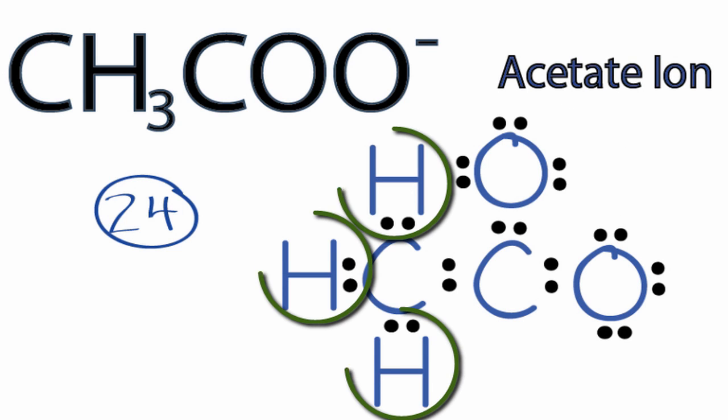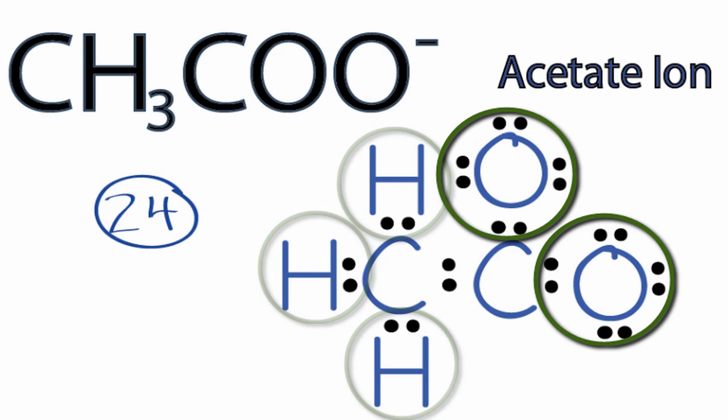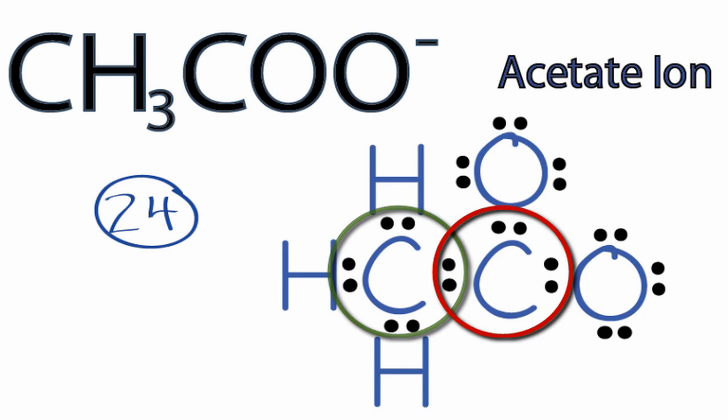So you can see the hydrogens each have two valence electrons. Their outer shells are full. The oxygens have eight. Their outer shells are full. The carbon on the left has eight, but that carbon in the middle only has six, so it does not have an octet.